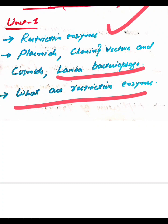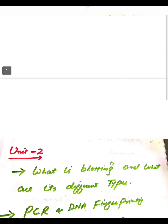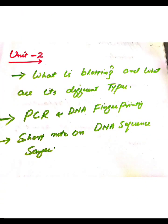Coming to unit 2nd, what are the important questions? They include what is blotting and what are its different types, what is PCR and DNA fingerprinting. Question number third: write short note on DNA sequencing Sanger.